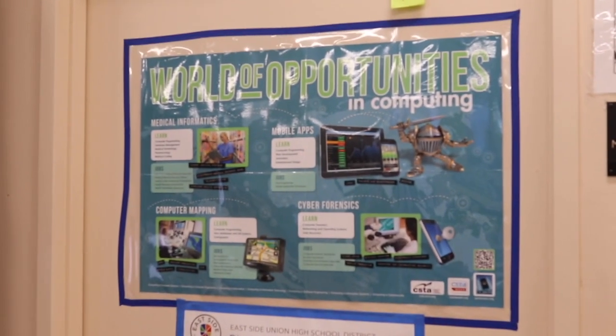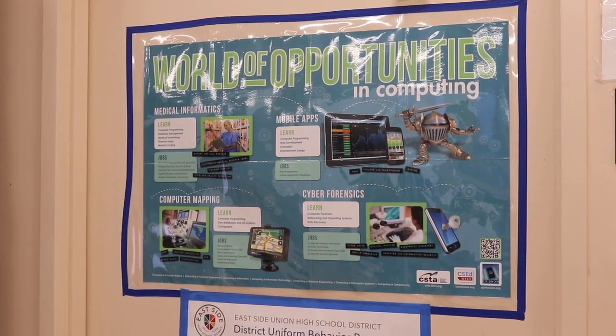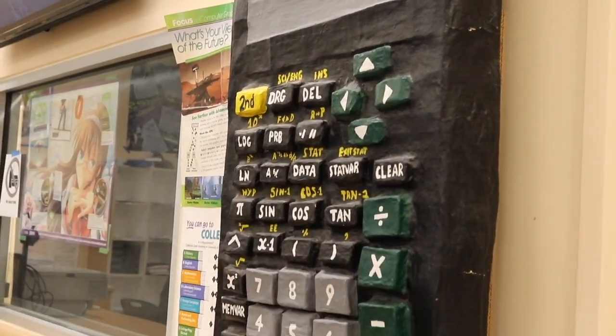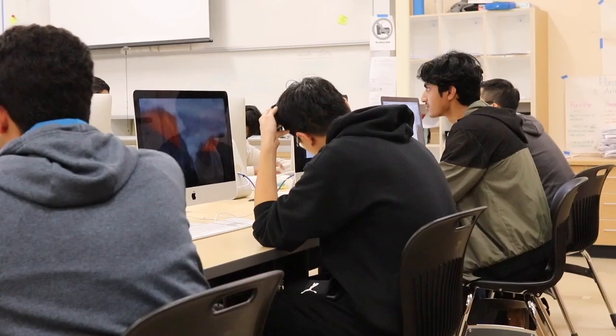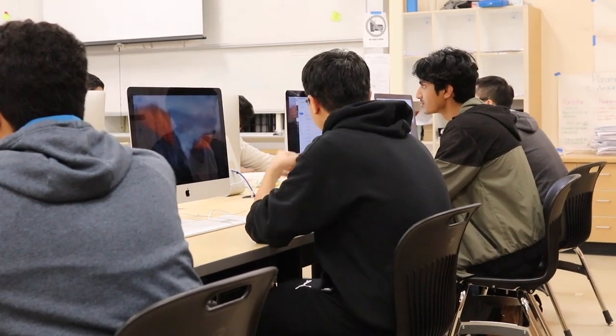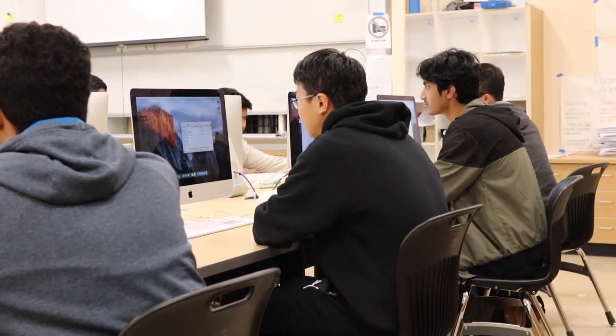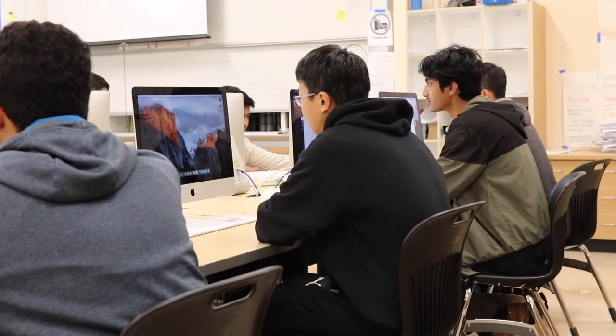We talk about different things like the internet, privacy on the internet, how information is transmitted on the internet. There are a total of six units. Only two of those units are programming. The others are basically about the internet and how information is communicated through the internet.